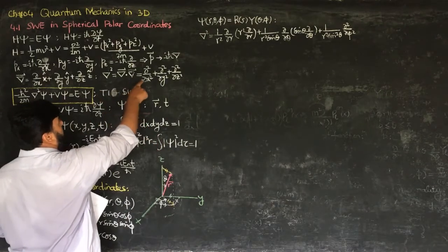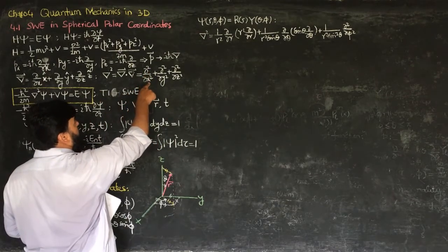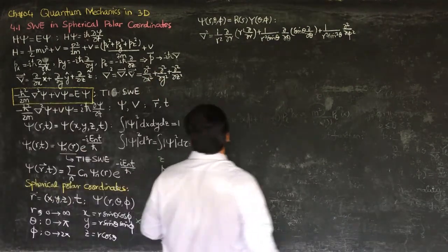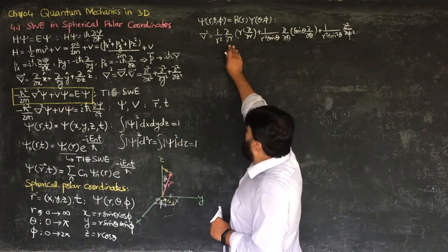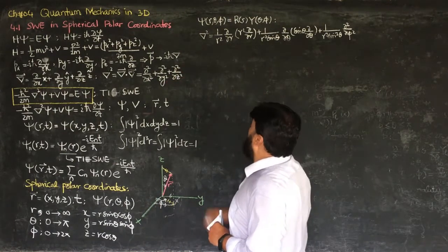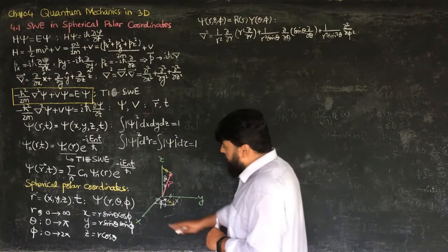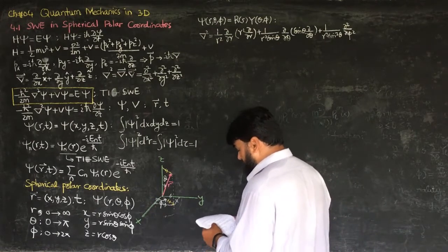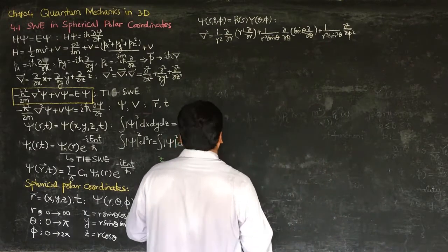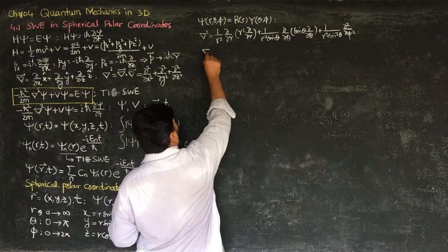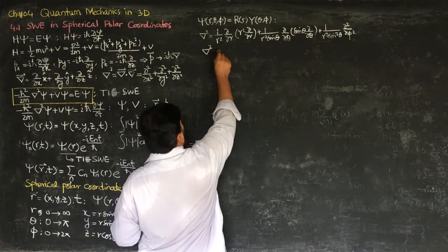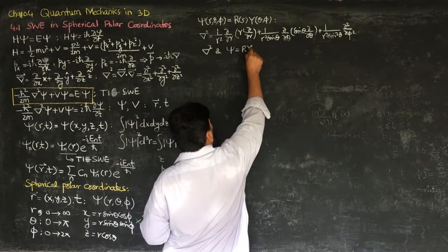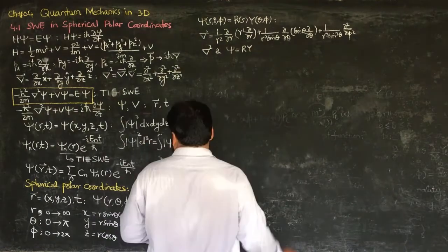We are working in Cartesian coordinates where del-squared equals the second partial derivatives with respect to x, y, and z. In spherical polar coordinates, we can convert this into r, theta, and phi by utilizing the relevant relations and the chain rule. We will substitute the value of del-squared and the wave function psi, written as R times Y.